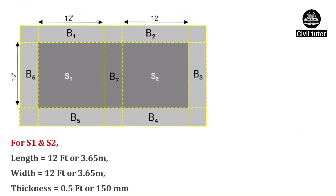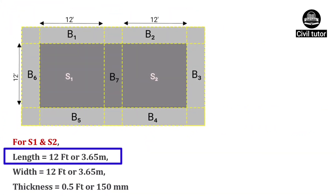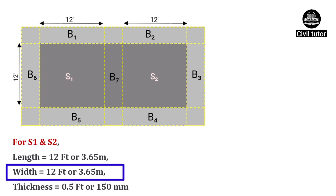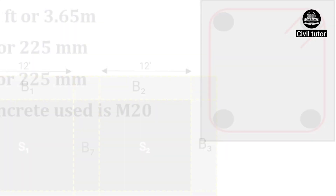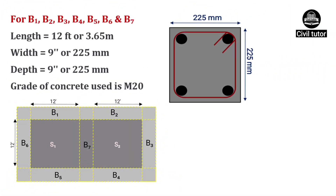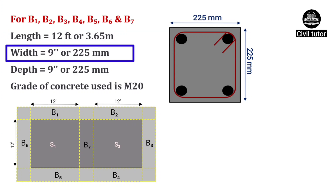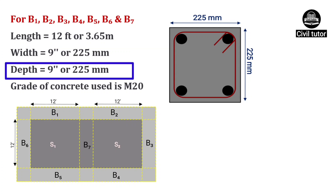For S1 and S2, the length of slab is 12 feet or 3.65 meters and width is also equal to 12 feet. The thickness of slab is 0.5 feet, that is 150 mm. For beams B1 to B7, the length of beam is 12 feet or 3.65 meters, width is 9 inches or 225 mm, and the depth of beam is also 9 inches or 225 mm.